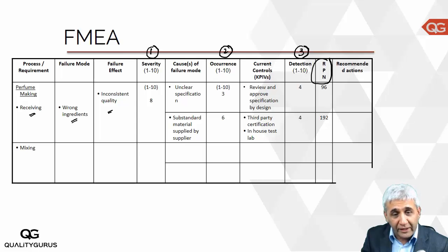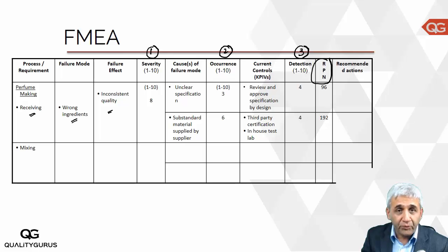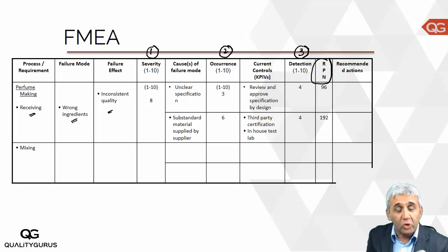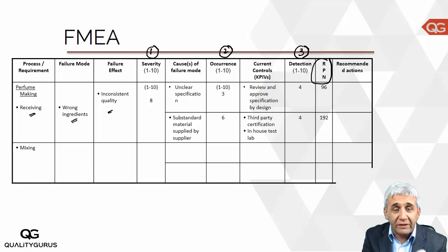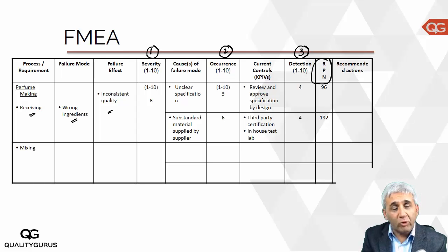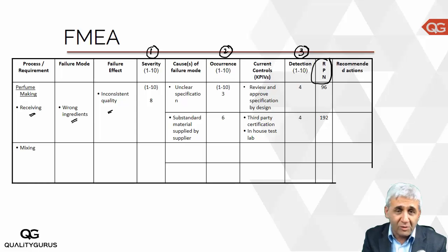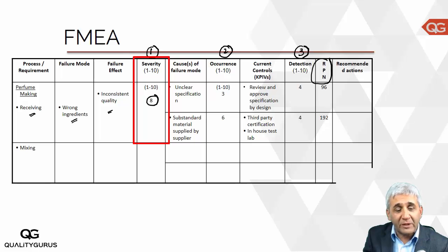Severity, occurrence, and detection are each rated on a scale of 1 to 10. Severity measures how big the issue is. A rating of 10 is something really hazardous that can put the customer in danger, while a 1 means the client might not even notice. For our perfume example, wrong ingredients were assigned a severity of 8, as wrong perfume bottles might give a wrong impression to the client.